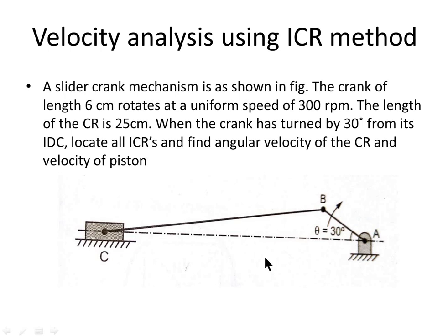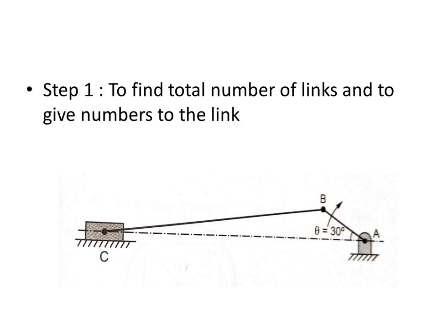The dimensions of the crank and connecting rod are given, and theta is also given. By considering these dimensions, we have to take a suitable scale and draw a configuration diagram. So first, let us draw a configuration diagram with a suitable scale. Then step number 1: to find the total number of links and to give numbers to each link.